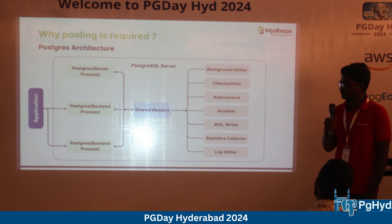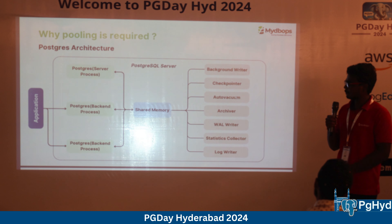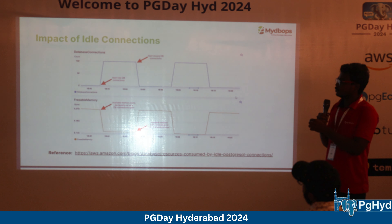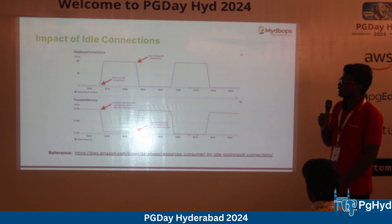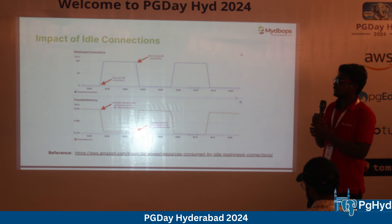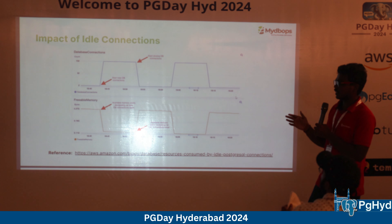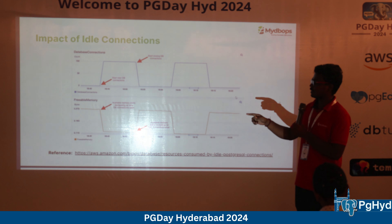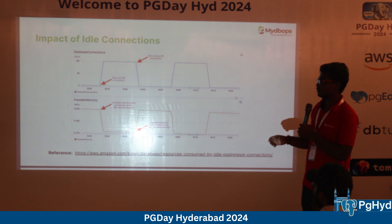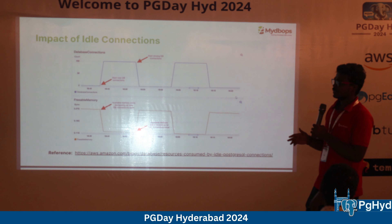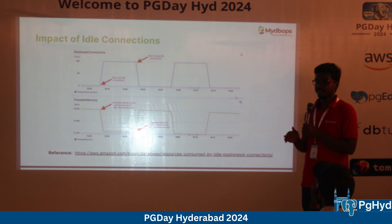The PostgreSQL server process is the main process responsible for starting all background processes like background writers, etc., which are essential to run the database. Shared memory is the common memory available to all processes. When an application connects, it reaches the PostgreSQL server process, which performs authentication. If authentication fails, the connection is rejected. If successful, the server takes a copy of the PostgreSQL process and assigns it to that application request.